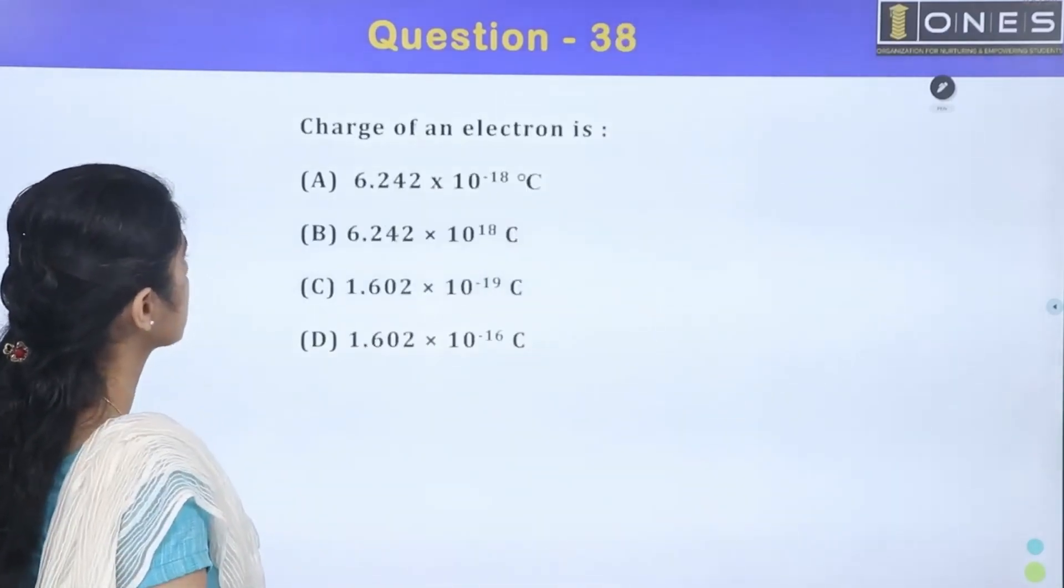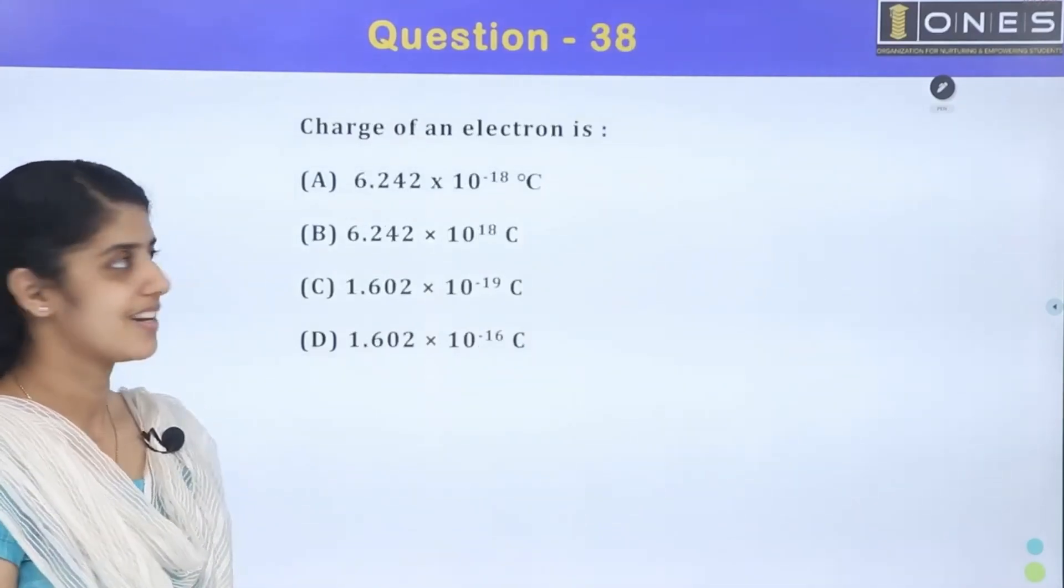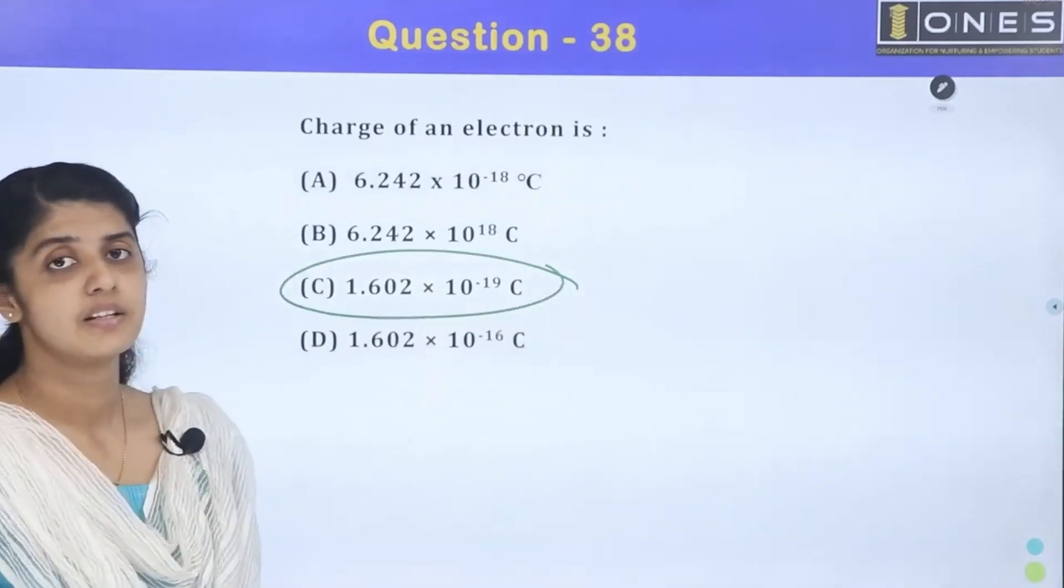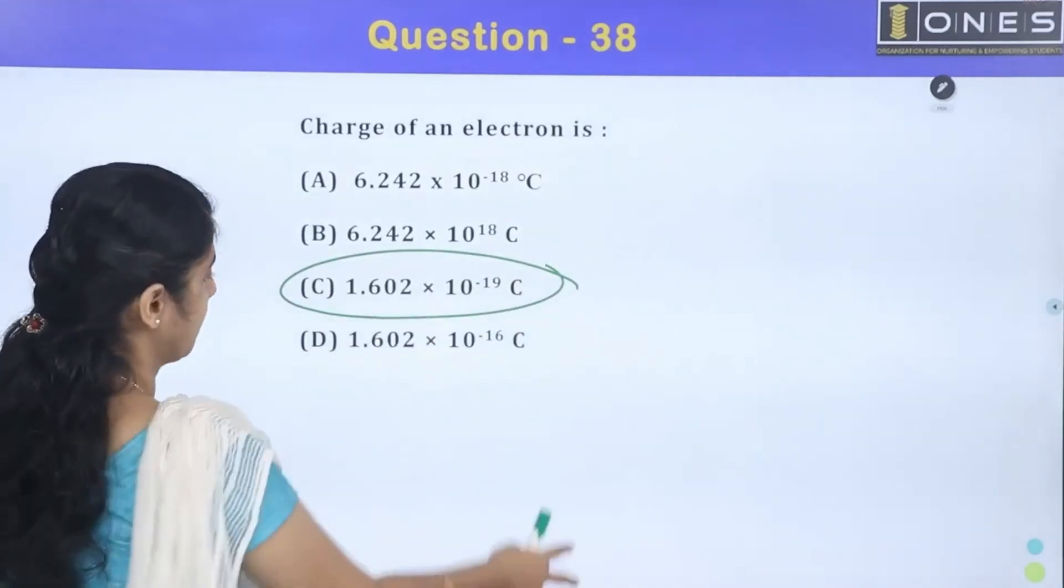Next question: charge of an electron. This is a basic question. The charge of an electron is 1.6 × 10^-19 Coulomb.